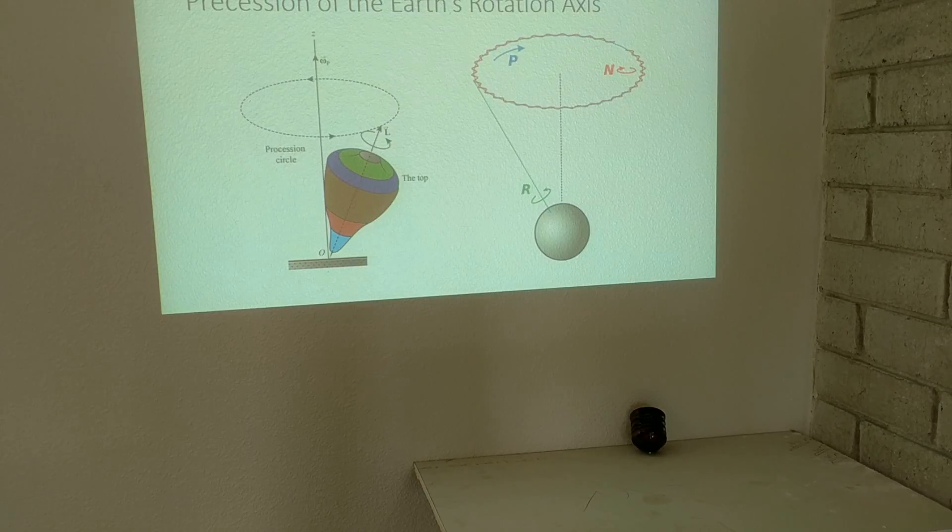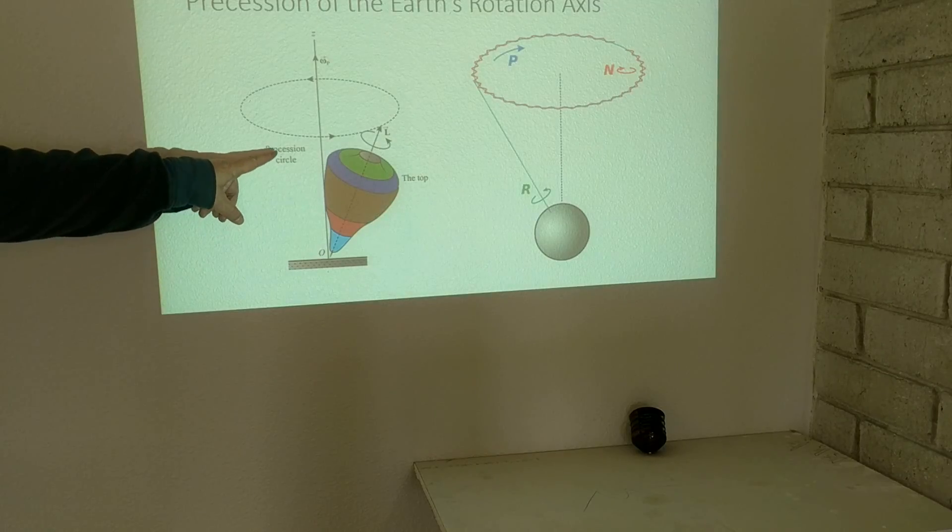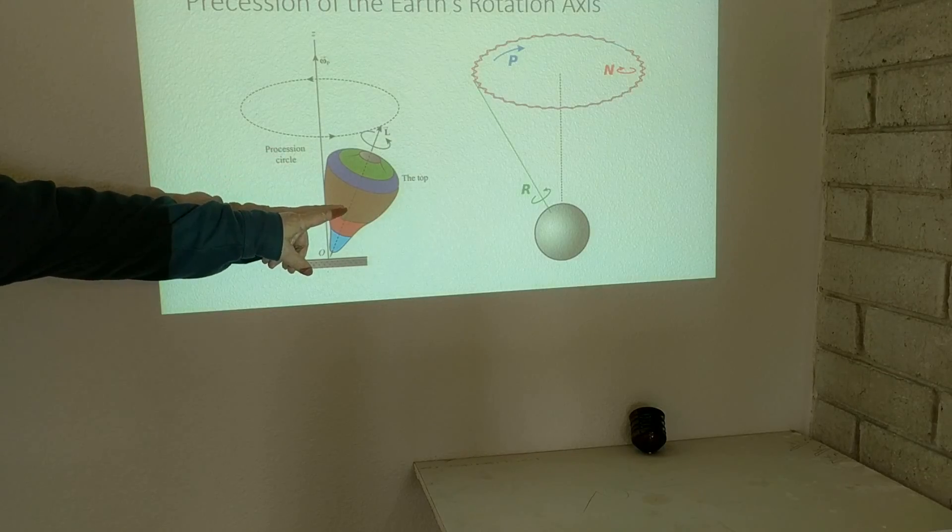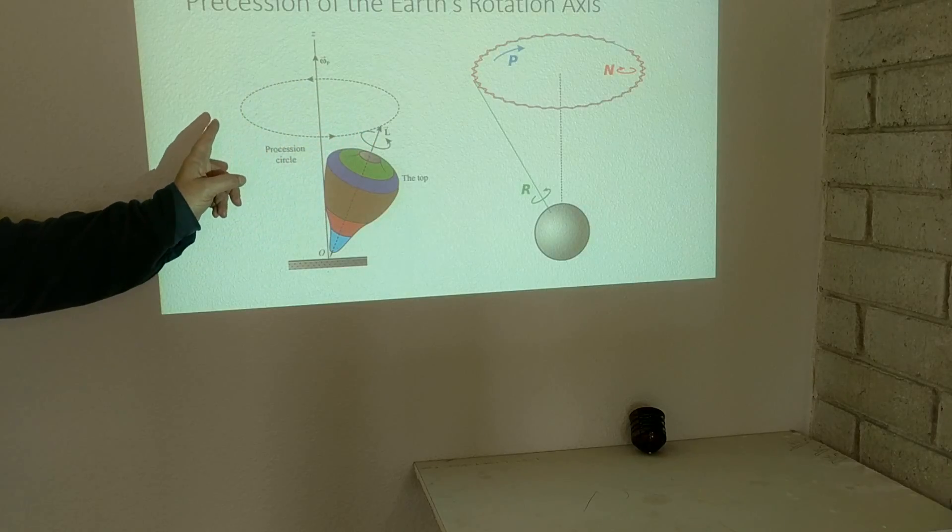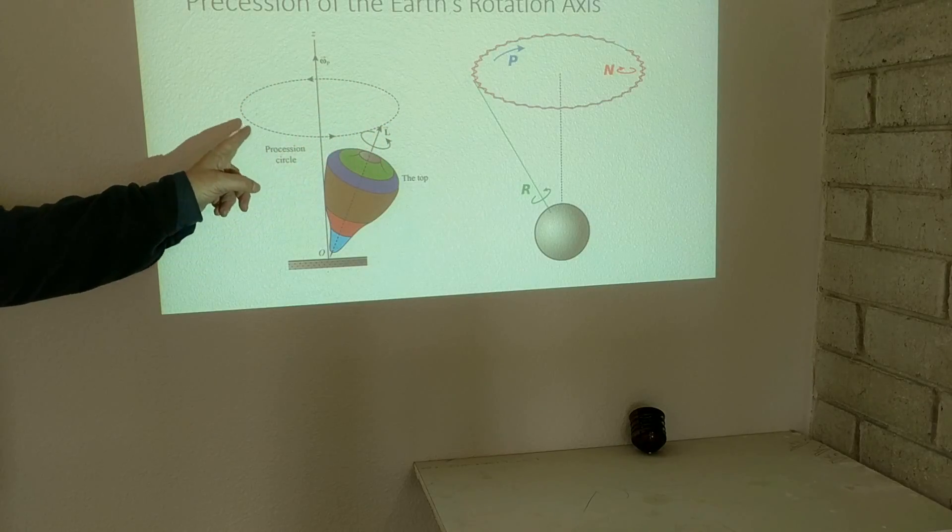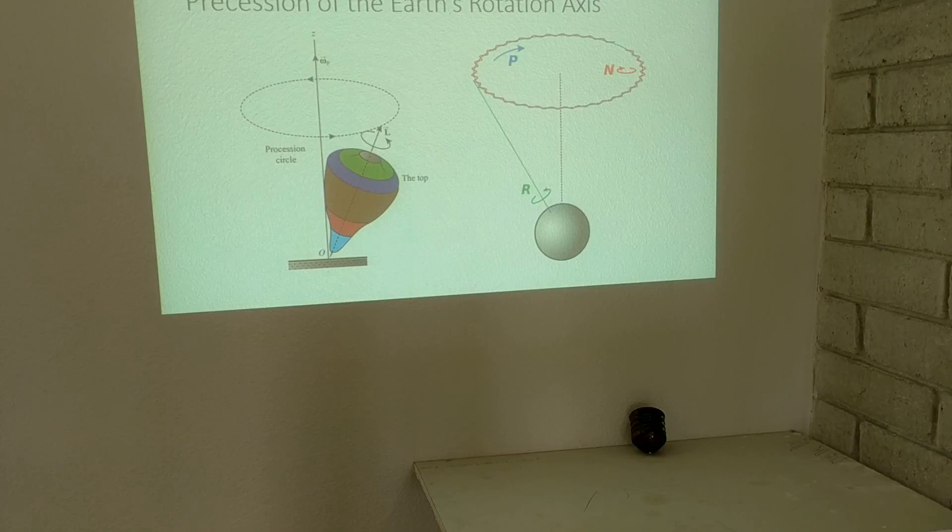Okay, so if we look at the top and how it is spinning, the axis of its rotation also has a movement, and that movement is called precession.